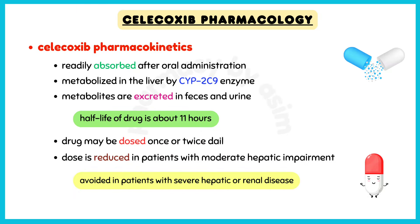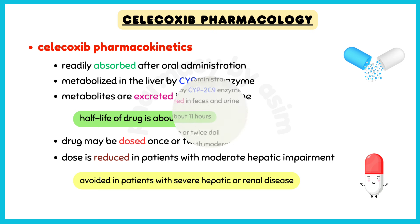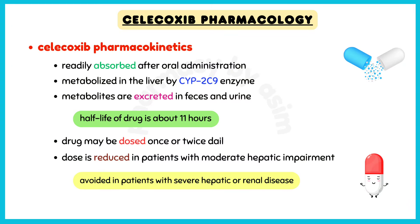Talking about the pharmacokinetics of this drug: Celecoxib is readily absorbed after oral administration. It is extensively metabolized in the liver by the CYP2C9 enzyme, and the metabolites are excreted in feces and urine. The half-life of this drug is about 11 hours, and the drug may be dosed once or twice daily. The dosage should be reduced in those with moderate hepatic impairment, and Celecoxib should be avoided in patients with severe hepatic or renal disease.